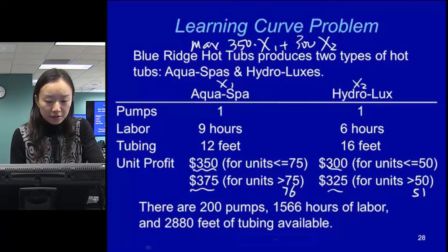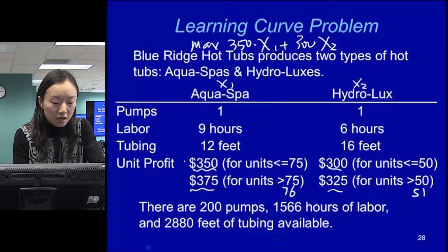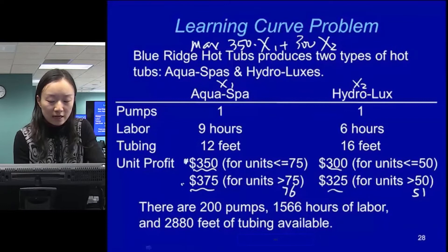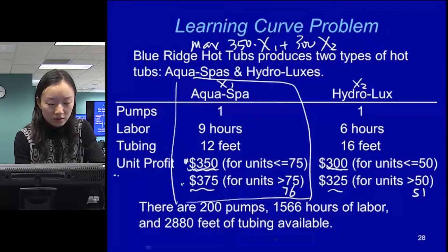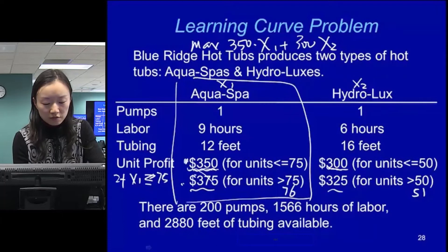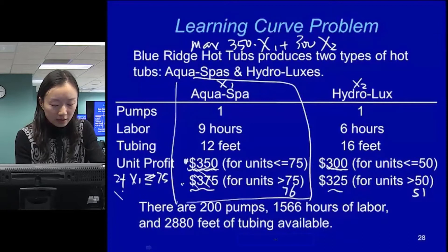What if we put both profits in the objective function? If we only produce fewer than 75 units, we need to turn off the higher profit term. If x1 is less than or equal to 75, we need x12's contribution to be zero. But if x1 is greater than 75, we need to include the higher profit. Can we simply use a binary variable y here?